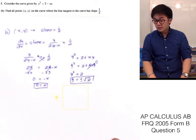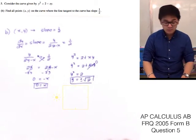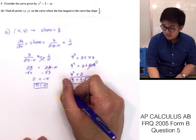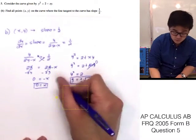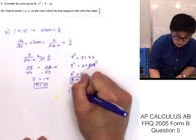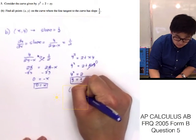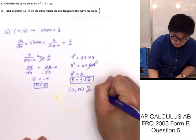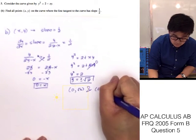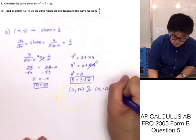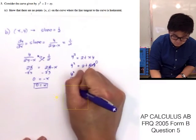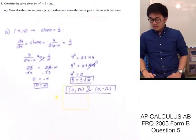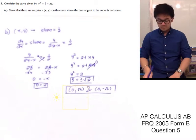So y is equal to plus or minus the square root of 2. Therefore, the points on this curve where the tangent line has a slope of 1/2 are (0, √2) and (0, −√2). That's problem letter B.